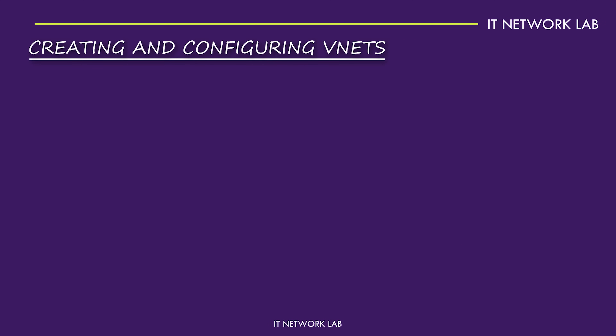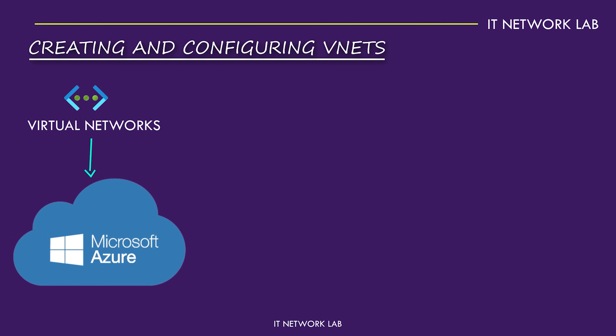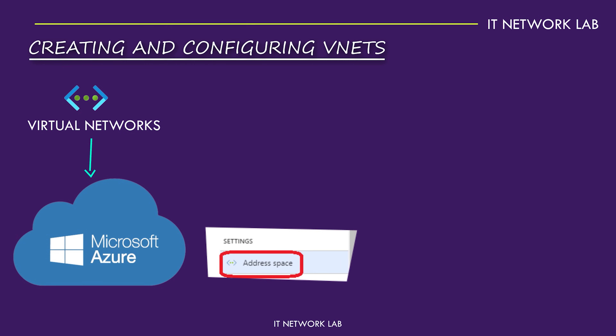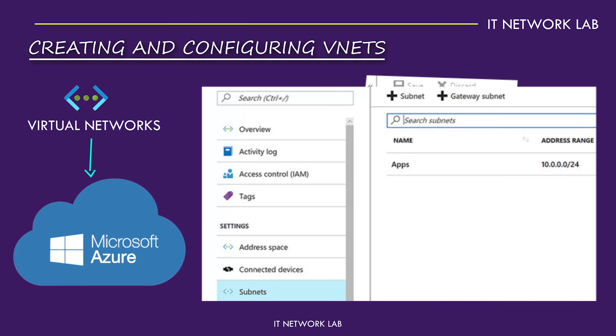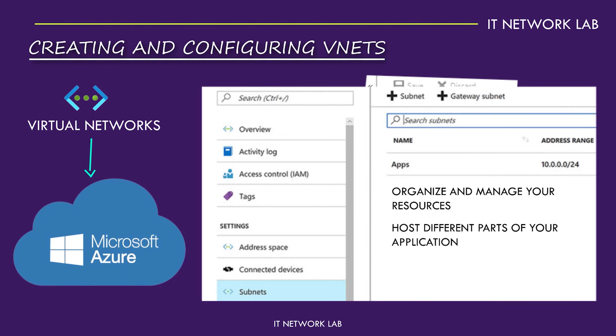Setting up a VNet in Azure is straightforward. You start by defining the address space, which is the range of IP addresses your VNet will use. This space is then divided into smaller segments called subnets. Subnets are crucial because they help you organise and manage your resources more effectively.